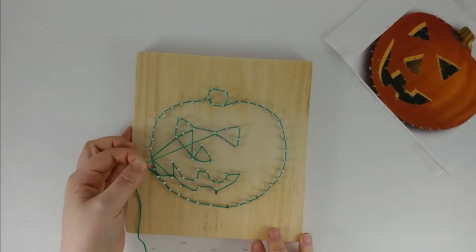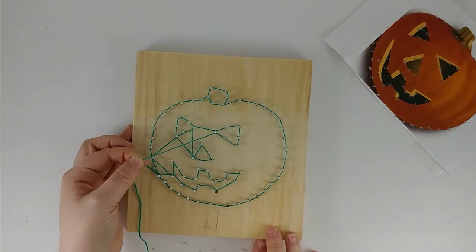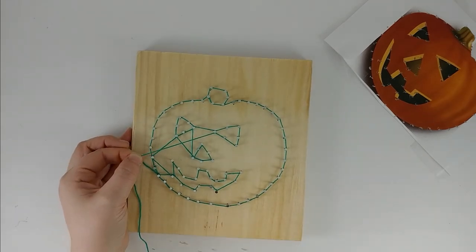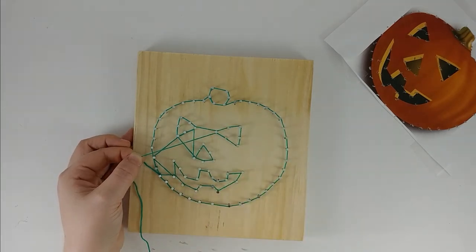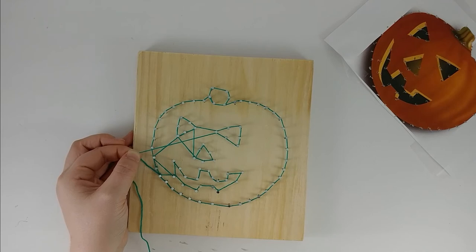All right, so now that I have all my outlining done, I am free to make whatever design I so choose to fill in the rest of my jack-o-lantern. I am kind of partial, personally, to geometric patterns, lines, and things like that, shapes. But you can do whatever criss-crosses or patterns that you so choose.